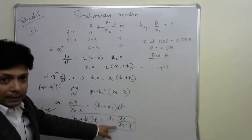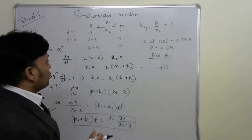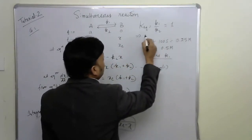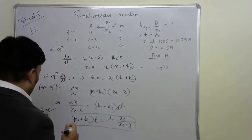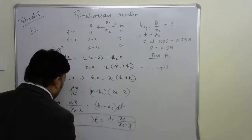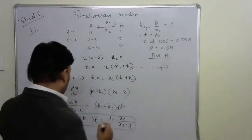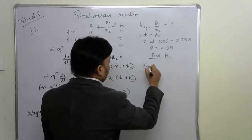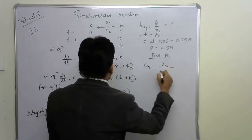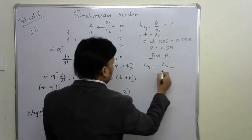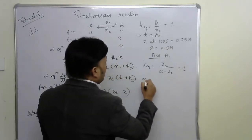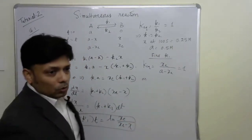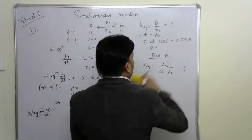To find K1 and K2, we first need the value of x_e. Since K_equilibrium is 1, that tells us K1 equals K2, so K1 plus K2 equals 2K1. Also, K_equilibrium equals the equilibrium concentration of product divided by the equilibrium concentration of reactant. A is 1 molar — please check the question, A is given as 1 molar, not 0.5 molar. Therefore x_e equals (1 minus x_e), giving x_e equals 0.5 molar.